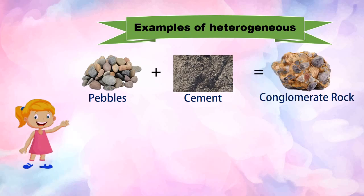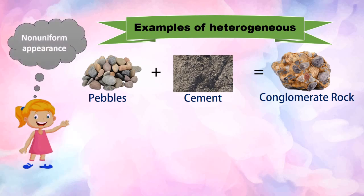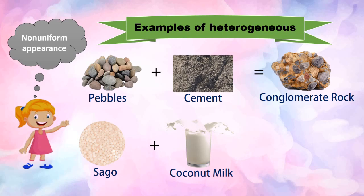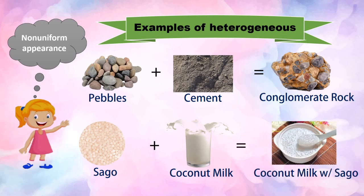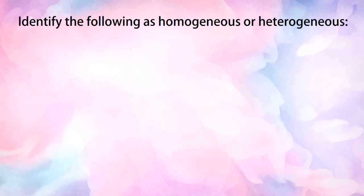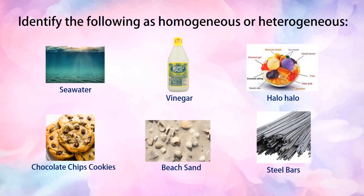Another example is sago, which is solid, mixed with coconut milk, which is liquid, to make coconut milk with sago. We can still see its components — there is sago and there is coconut milk. Now let us identify the following as homogeneous or heterogeneous mixture.